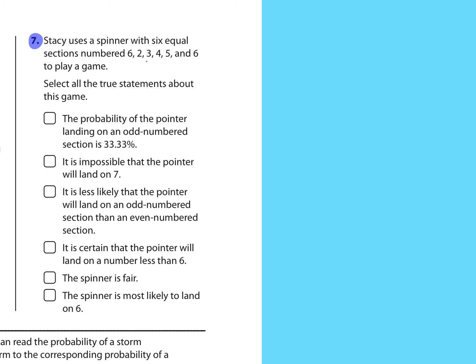Well, the odd numbers are 3 and 5, so there is a 2 out of 6 chance, which is the decimal 0.3 repeating, which does come out to be about 33.3 repeating percent, so that is true. The next says it's impossible to land on 7. Well, 7 is not a choice, so there's 0 7s out of 6, so that is 0, so that is impossible. True.